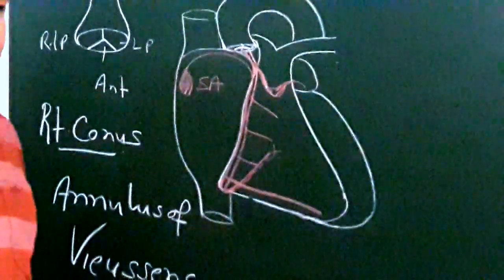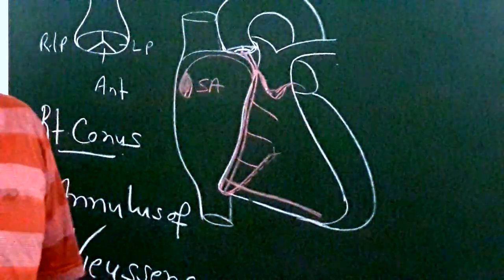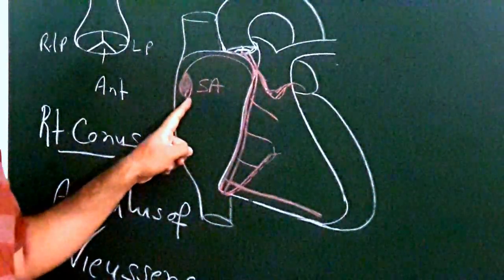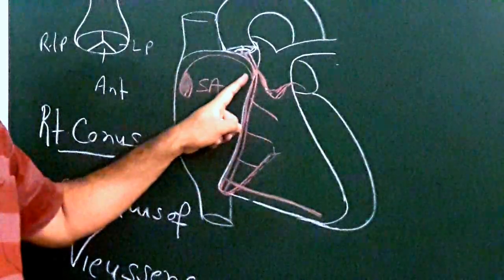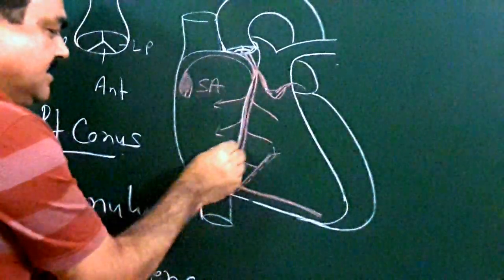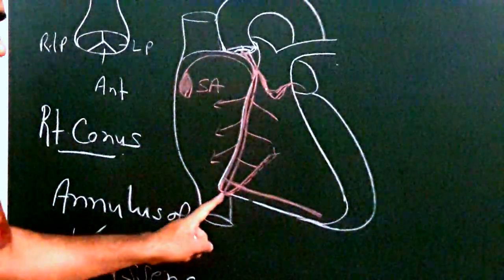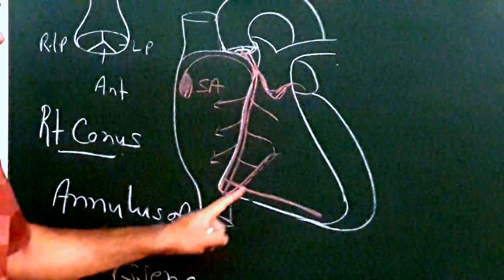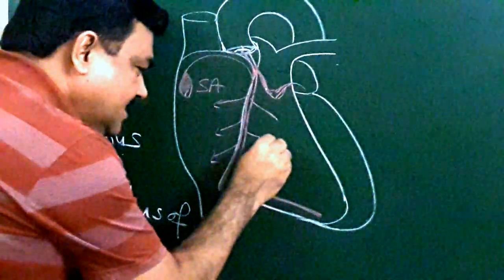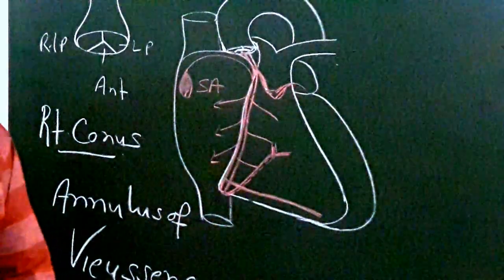In 65% of cases, the SA node is supplied by a branch from the right coronary artery, and in about 30% of cases it is supplied by a branch from the left coronary artery. The RCA also gives atrial branches supplying the atria. From the inferior border, the artery turns onto the diaphragmatic surface, where it gives terminal branches that anastomose with the terminal branches of the left coronary artery.